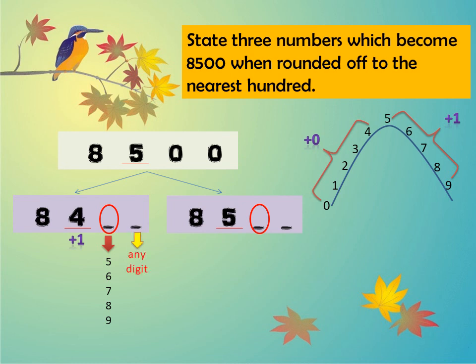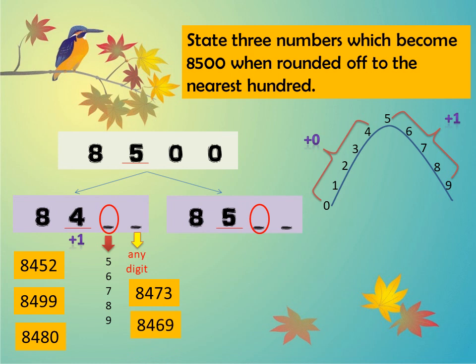At the ones place, di tempat ones, kita boleh letak any digit from 0 to 9. So for the first possibility, some example answers include: 8,452; 8,499; 8,480; 8,473; 8,469. Dan ada banyak lagi yang kamu boleh pilih — tak semestinya 5 ini saja.